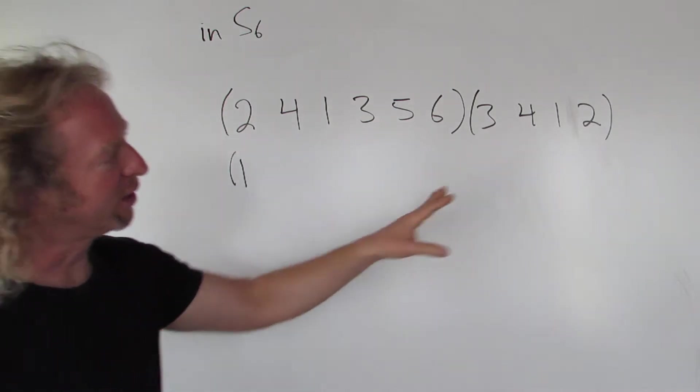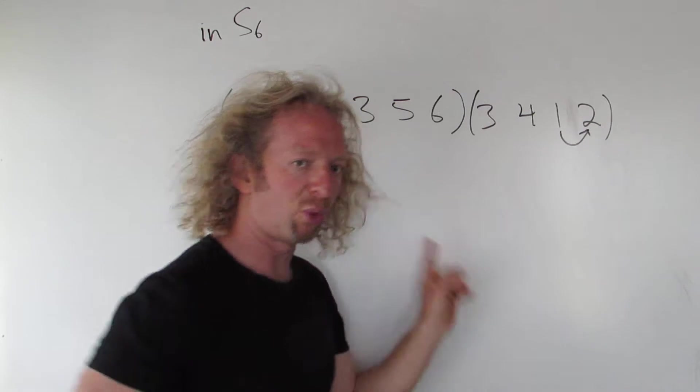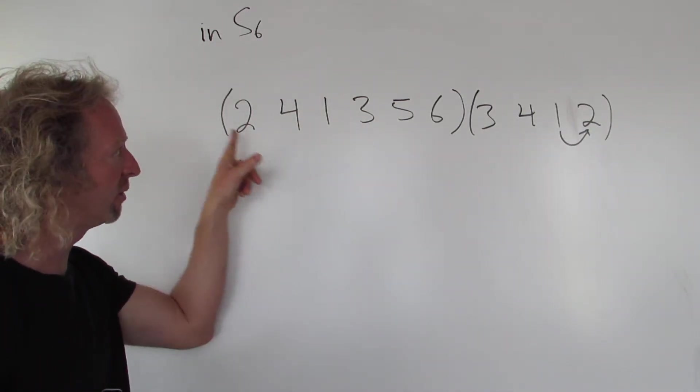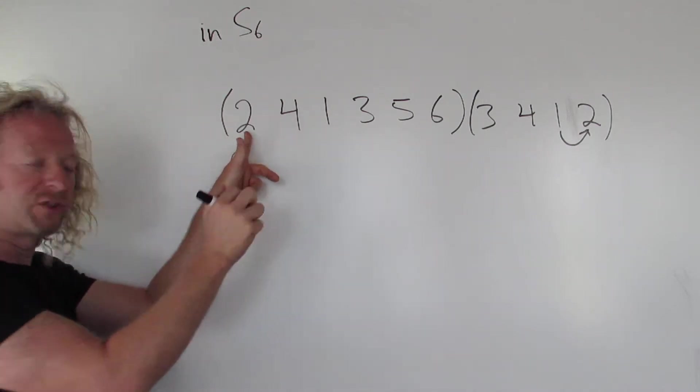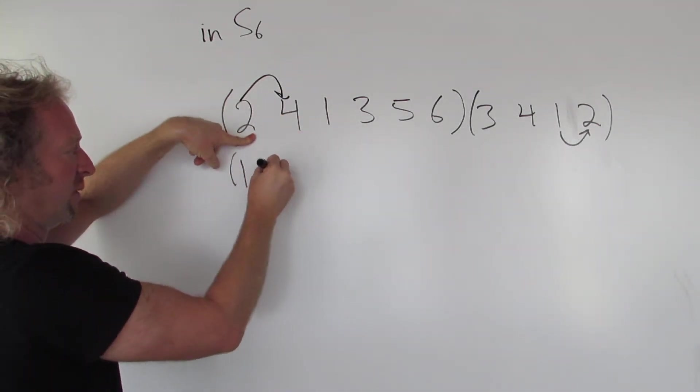Then you look over here and say, where does one go? So one goes to two. Then you look over here for the two. Here's the two. So two goes to four. That means that one goes to four.